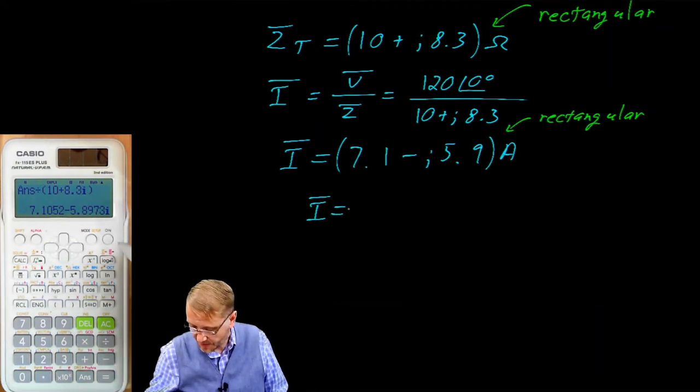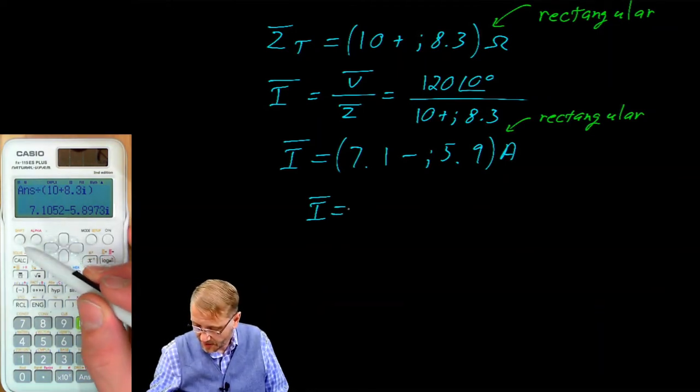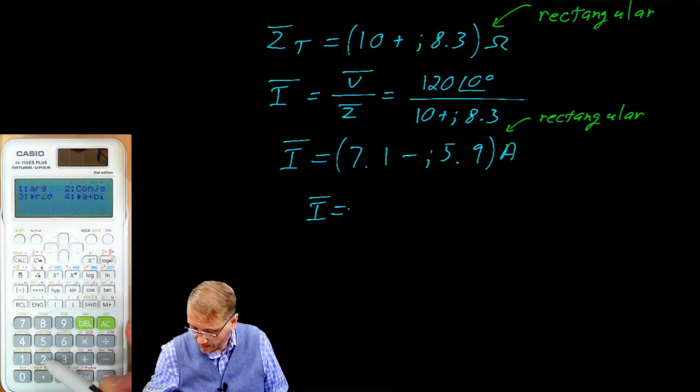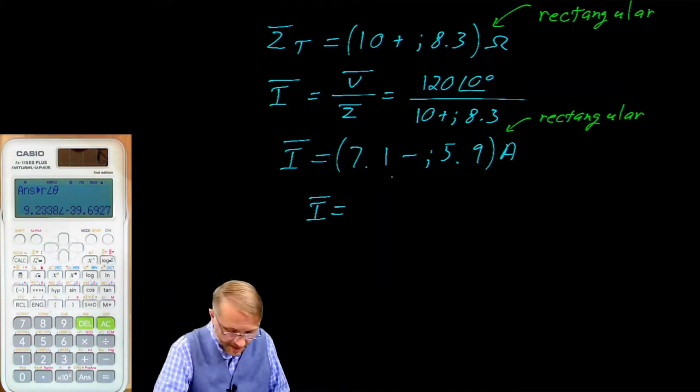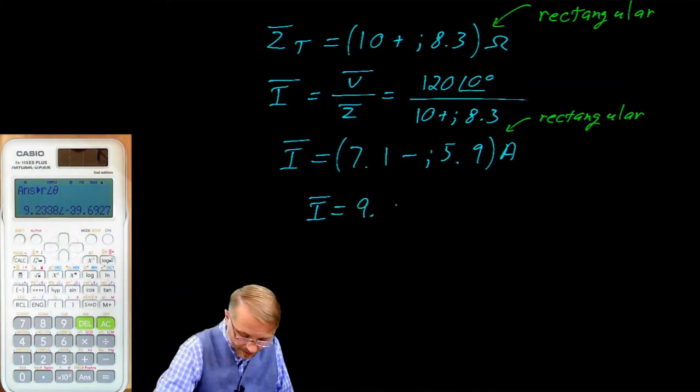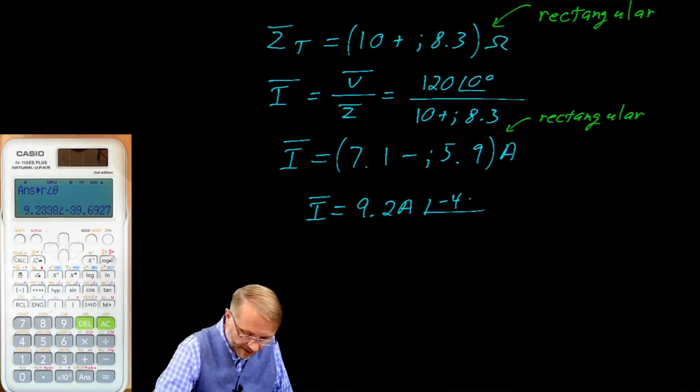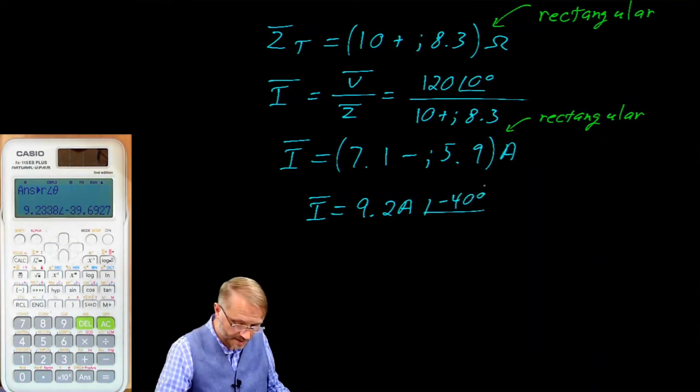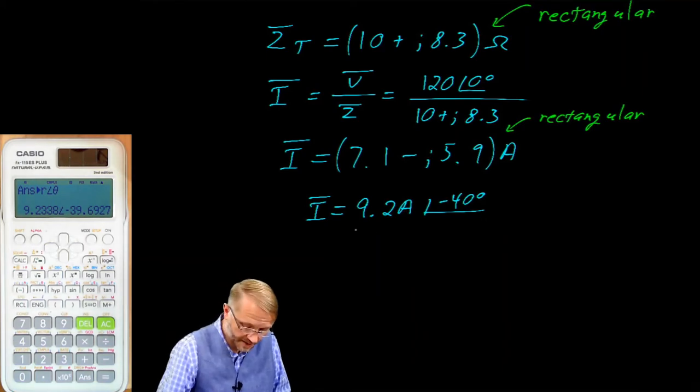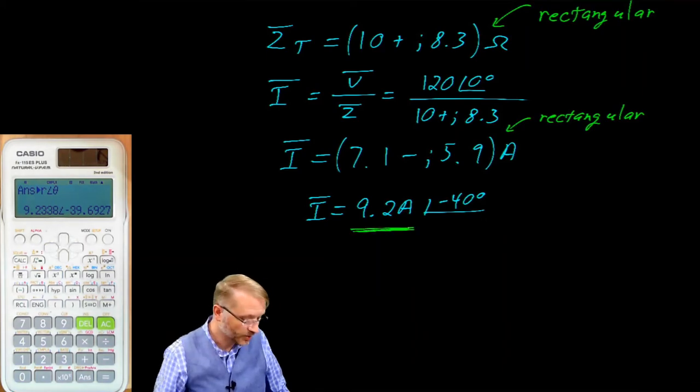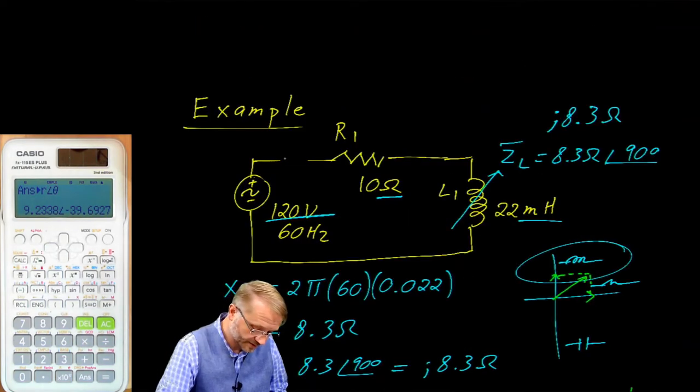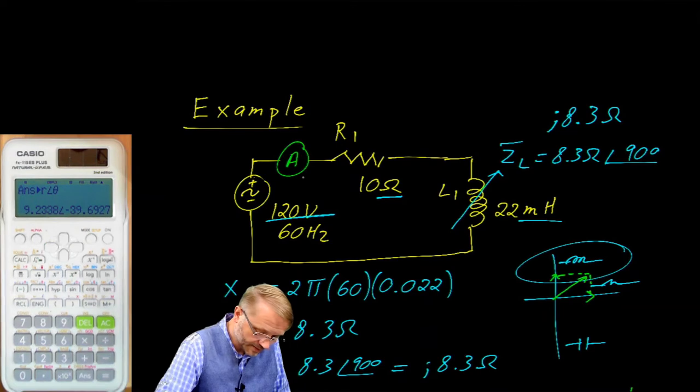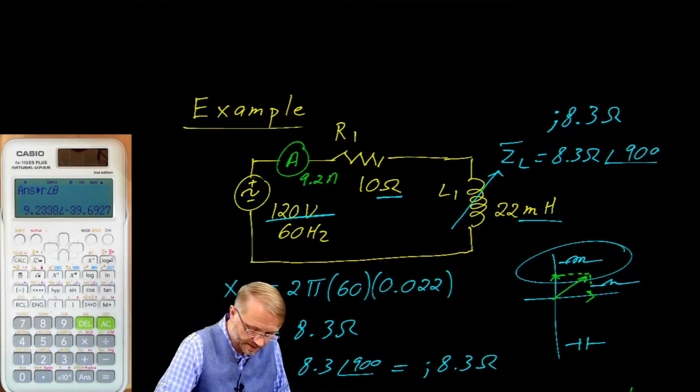Now you divide that by 10 plus 8.3 J. Close the parenthesis, and your answer is 7.1 minus J 5.9. So that is the current in amperes. In rectangular, while that's true, that's not what your current meter would actually read. Instead, we need to shift this to polar mode. So shift, complex, and then this one right here, 3. Here's our answer in polar mode. So 9.2 amps at a phase angle of negative 40 degrees. So if you were to use your meter, your true RMS meter, you would read 9.2 amps in this circuit. If you were to insert your meter right there, it would read 9.2 amps.